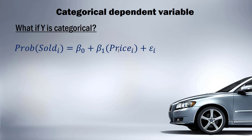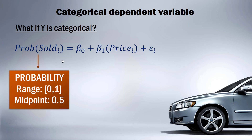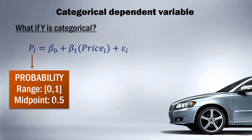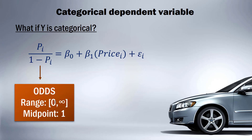Currently we have the probability of the car selling as a function of price. This probability of sale should range from zero to one, with a midpoint of 0.5. We'll call it P for short. The problem is that this range is limited to 0 and 1, so estimates can fall outside it — for example, when price is very high we got negative probabilities. The first modification is to divide P by 1 minus P.